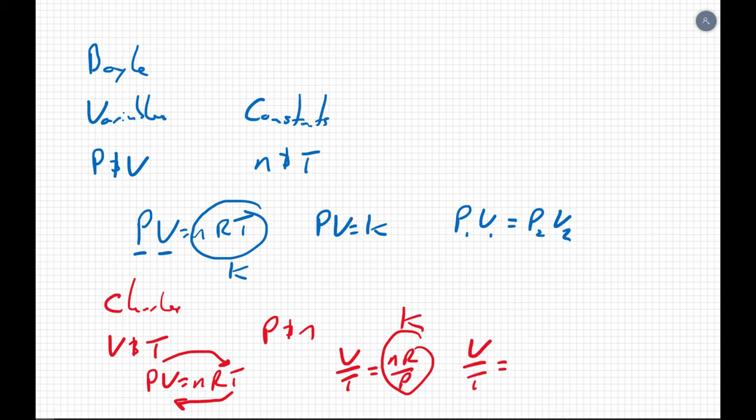V over T equals K. Or V1 over T1 equals V2 over T2. Let's do one more.